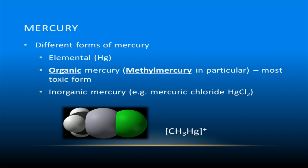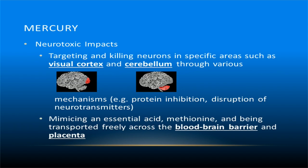Mercury is a neurotoxic metal that has been used in products such as light bulbs, batteries, paint, and thermometers. Syphilis was frequently treated with mercury chloride before the advent of antibiotics. The primary man-made sources of mercury pollution are coal-burning power plants. There are many different forms of mercury, but the organic form, known as methylmercury, is the most toxic form. The neurotoxic impacts of mercury exposure include the targeting and destruction of neurons in specific areas of the brain, such as the visual cortex and cerebellum, through protein inhibition and disruption of neurotransmitters.